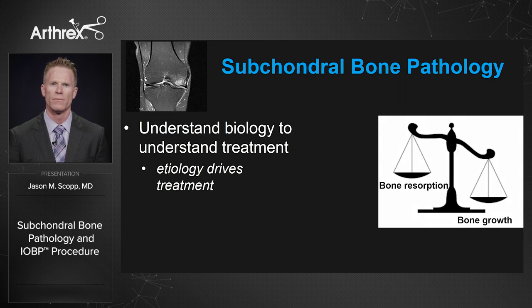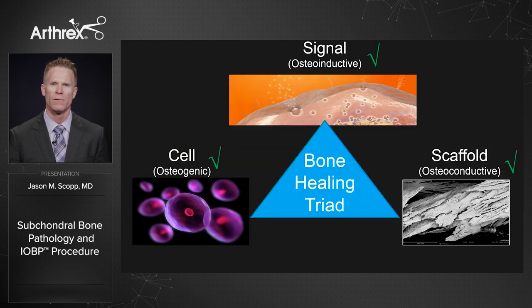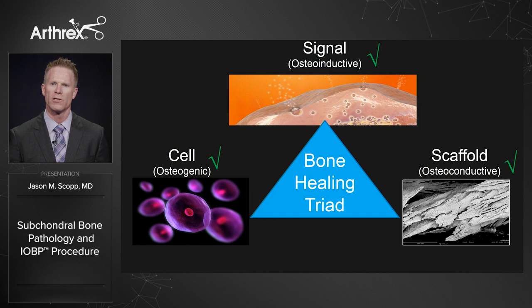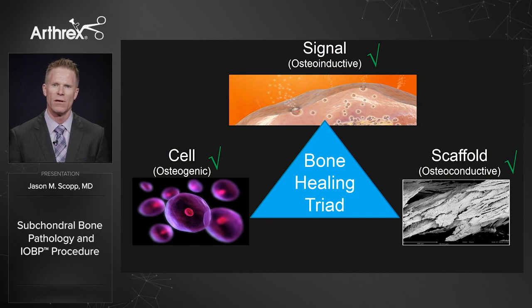To understand the treatment of subchondral bone pathology, we have to understand the biology, because etiology drives treatment. That's where we get to the bone healing triad. When we think about how to get bone to heal, it needs three requirements: a signal, a scaffold, and a cell. If we only have one part of that triad, our bone growth and healing will fail.